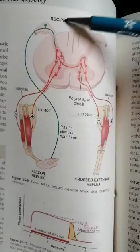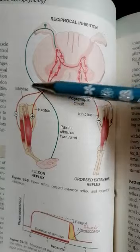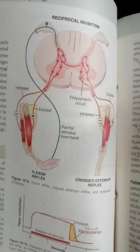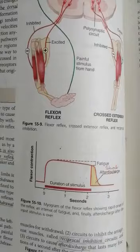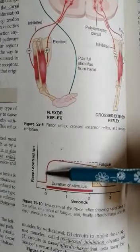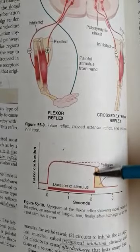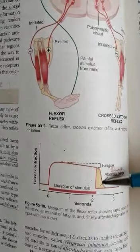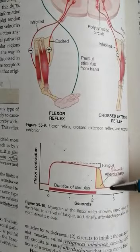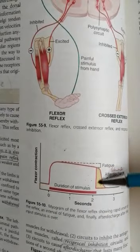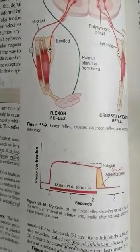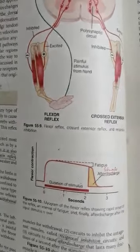In the flexor reflex there is a divergent circuit, which is important for divergence of the impulse. The second circuit is the reciprocal inhibition circuit — the inhibition of the antagonistic muscle. The third is the after discharge circuit: when the stimulus is over or fatigue occurs after the action potential, there will be after discharge — a prolongation of the impulse or slow fatigue of the impulse. This after discharge is very important for maintaining withdrawal from the painful stimulus.